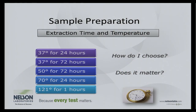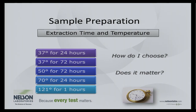Once we know how much fluid to extract the device in, we need to decide the extraction temperature and duration. The options from ISO 10993 are: 37°C for 24 hours (cytotoxicity only), 37°C for 72 hours, 50°C for 72 hours, 70°C for 24 hours, or 121°C for one hour. Many people want to choose 37°C because that's body temperature, but if your device has contact with the body longer than 72 hours, we recommend extracting at 50°C to get a more exhaustive, long-term extraction.